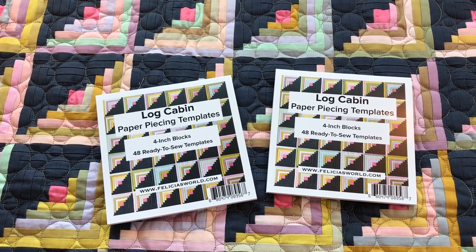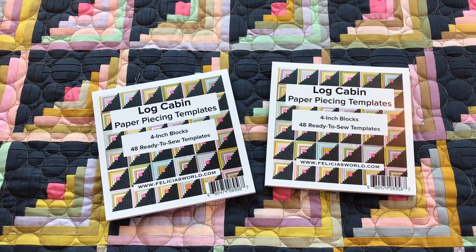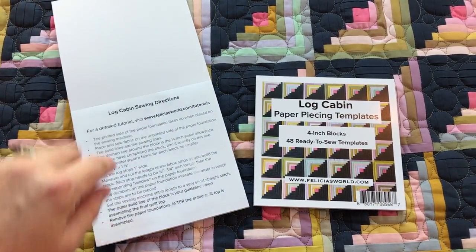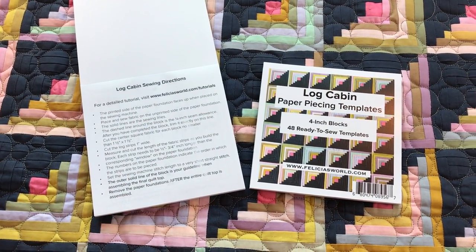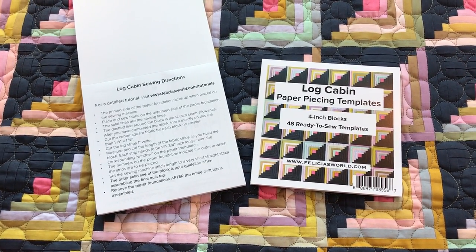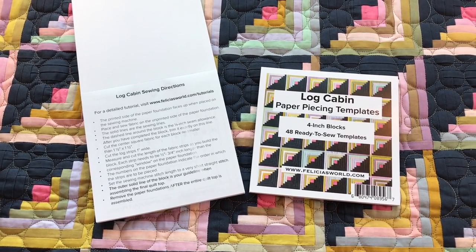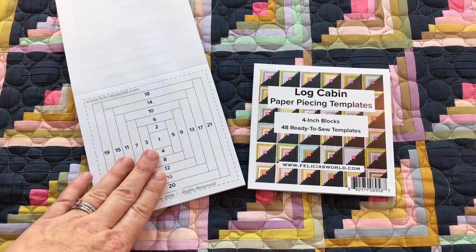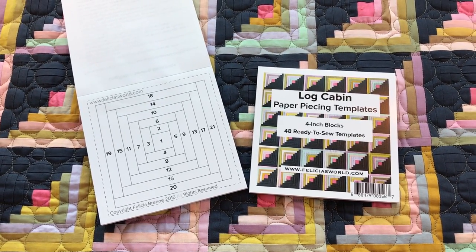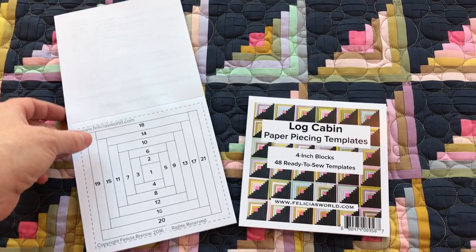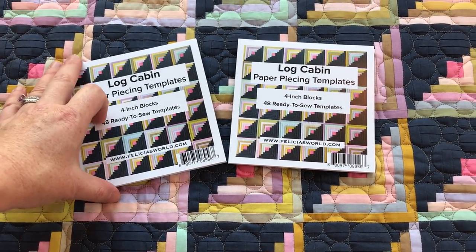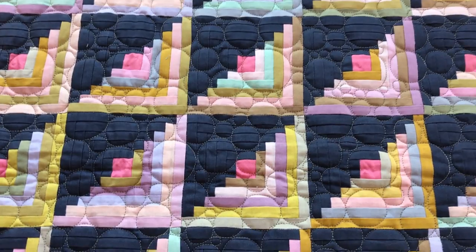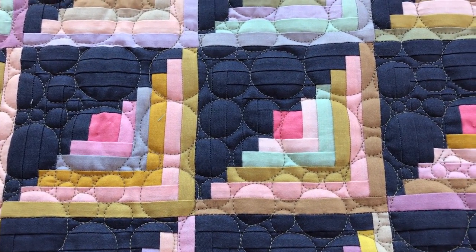So here you're seeing the actual booklets of paper piecing templates that we're going to be working today in our log cabin tutorial. Each of these books has a little single page that is the sort of a short set of directions for how to use these templates. If you are new to foundation paper piecing, this is probably not going to be all that helpful for you. So that's why we have these video tutorials to help you get off to a good and happy start instead. And then here you can see there's 48 paper templates. If you are making a larger project, then you are going to need more than one of these blocks. And of course the actual blocks here are only four inches. They're pretty small.